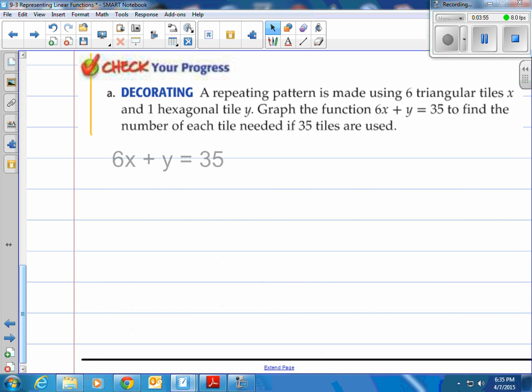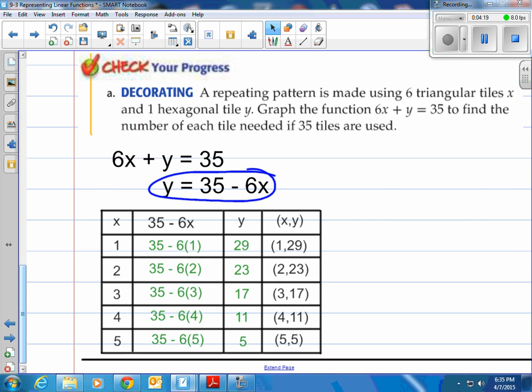All right, step one. You're going to take your 6x plus y equals 35 and solve it for a variable. In this case we're going to solve it for y, meaning get y by itself. And to do that all we have to do is subtract the 6x from the left side and the right side. When you subtract it from the left side it disappears. When you subtract it from the right side you end up with 35 minus 6x. Right there we have it solved for y now.